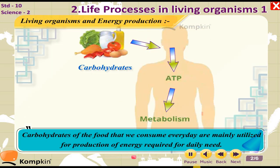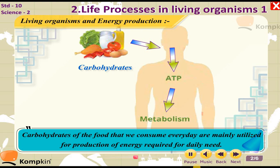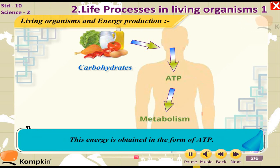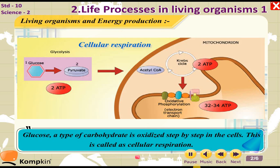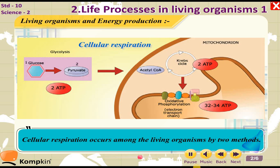Carbohydrates from the food we consume every day are mainly utilized for the production of energy required for daily needs. This energy is obtained in the form of ATP. Glucose, a type of carbohydrate, is oxidized step by step in the cells. This is called cellular respiration.